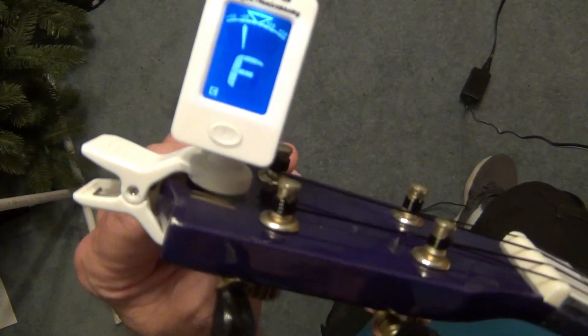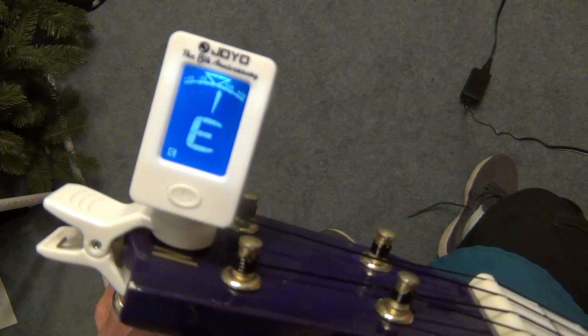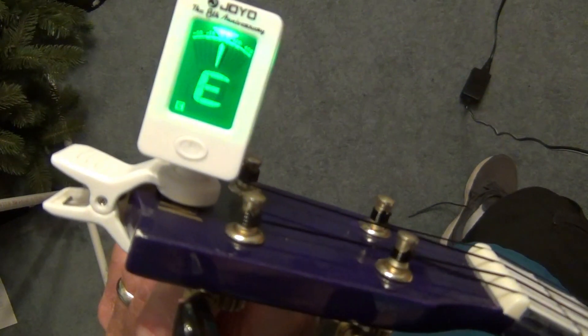It's in an F now. I need it to get to E. Keep loosening it. Almost there. Green light.